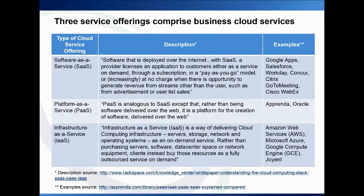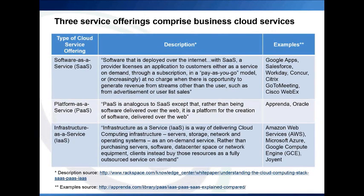However, it's also confused with some business software terms, and this is why people get really mixed up sometimes. There are three service offerings that comprise a business cloud service offering, to be distinguished from your consumer experience with applications on your phone or over the internet. First of all, there's software as a service — software deployed over the internet, oftentimes in a pay-as-you-go or subscription model, sometimes even free through revenue streams like advertising. A consumer example might be Pandora or Spotify, while work examples include Salesforce, Workday, or GoToMeeting.